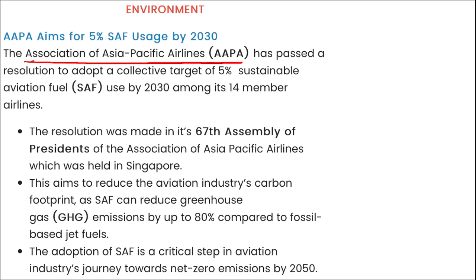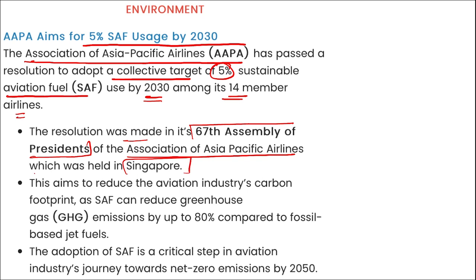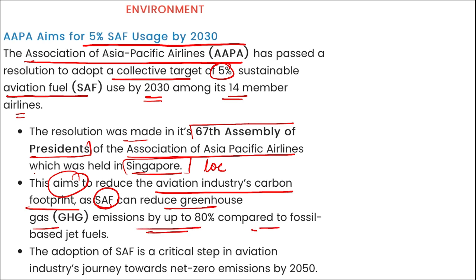The Association of Asia Pacific Airlines (AAPA) passed a resolution to adopt a collective target of 5% sustainable aviation fuel (SAF) usage by 2030 among their 14 member airlines. This resolution was made at AAPA's 69th Assembly of Presidents, held in Singapore. The aim is to reduce aviation's carbon footprint, as SAF can reduce greenhouse gas emissions by up to 80% compared to fossil-based jet fuels.